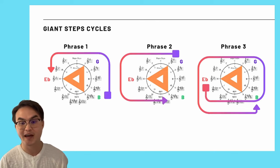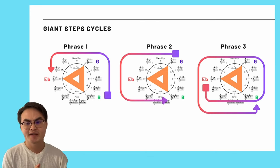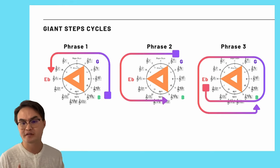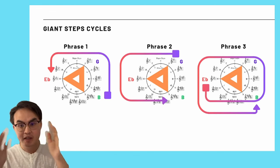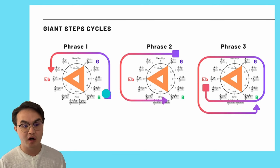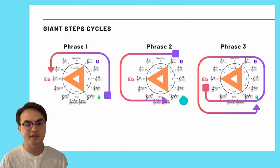And so Giant Steps as a process is it cycles counterclockwise around the circle of fifths. And specifically, the point at which each phrase begins is either on the starting key of B, or it is adjacent to B, that is to the right of B, G, or the left of B on E flat.